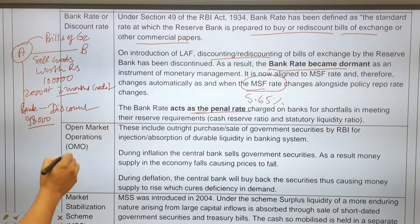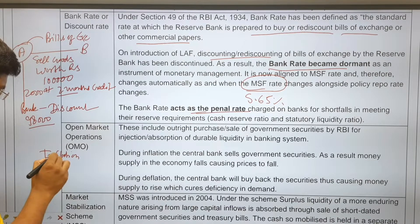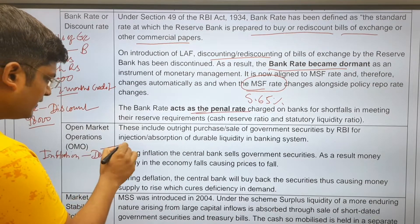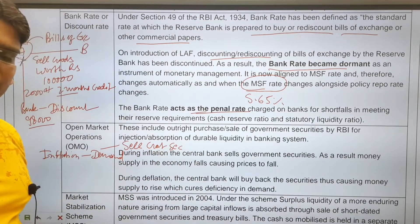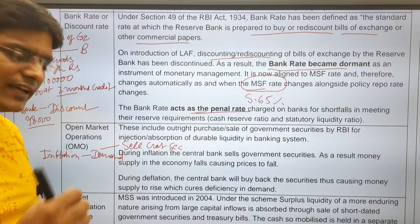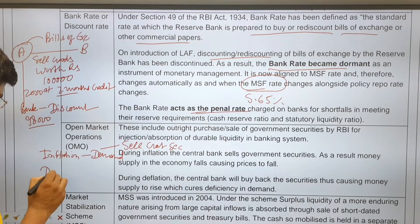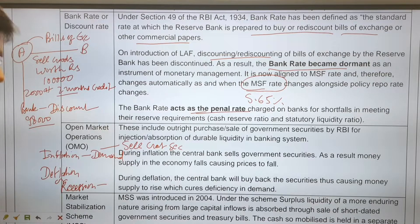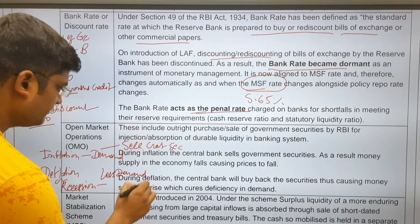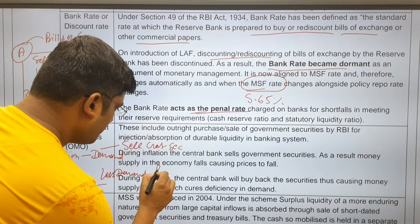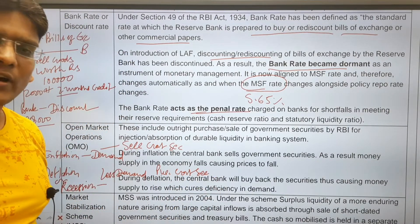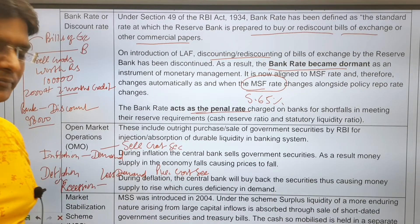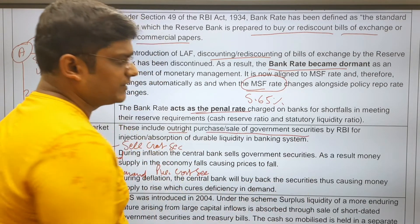Open Market Operations (OMO): In case of inflation, RBI sells government securities. People buy government securities, have less money, and inflation comes under control. In case of deflation or recession, RBI purchases government securities from people, who then have more money to buy goods, helping the economy come out of recession. OMO is the outright purchase and sale of government securities by RBI.